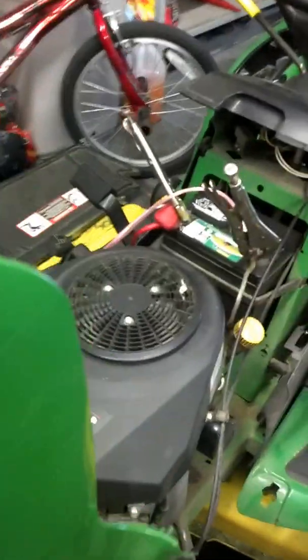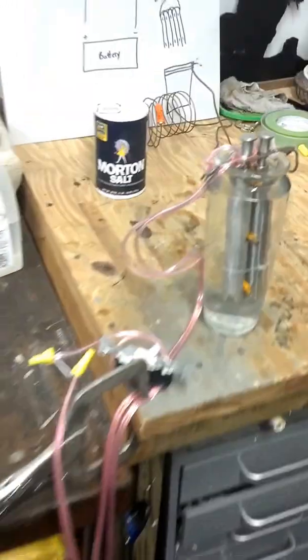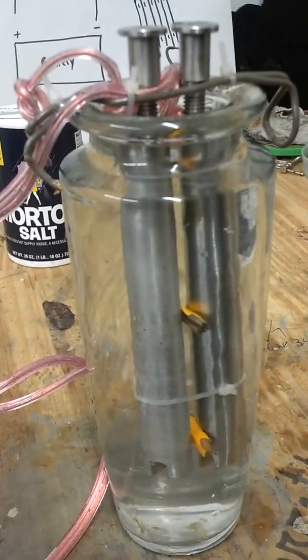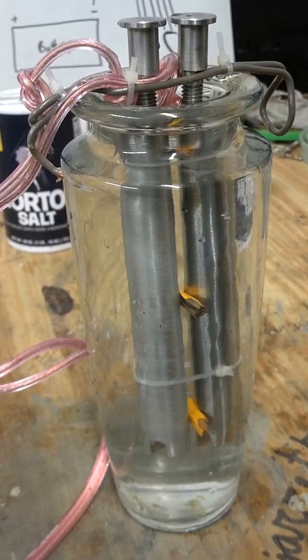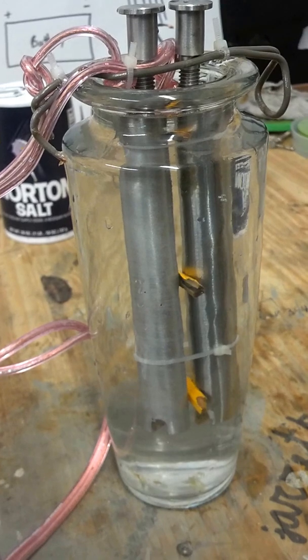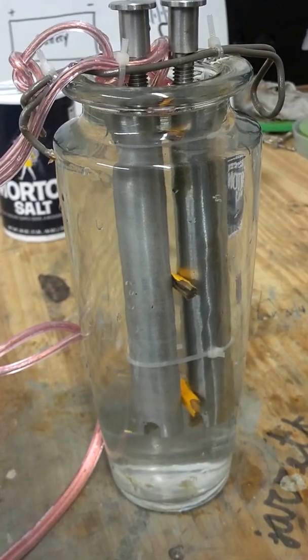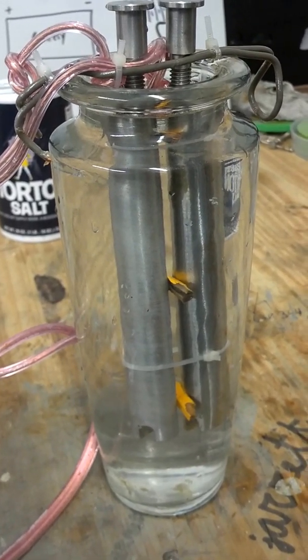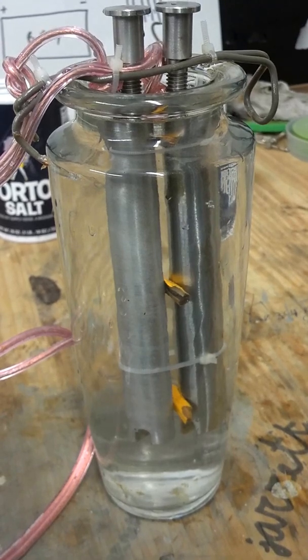...to a 12 volt DC battery. Here's how it's supposed to work: the negative electrode will put off all the bubbles and create the hydrogen. The positive one just sits there and actually starts to oxidize, so we'll use stainless steel rods so that we don't get all this brown dirty water.